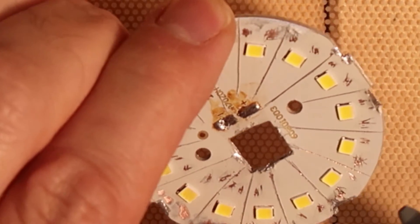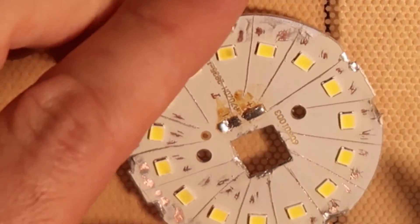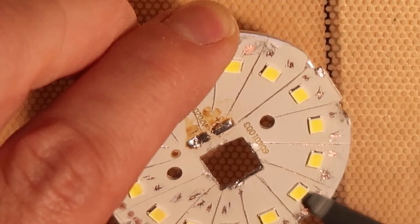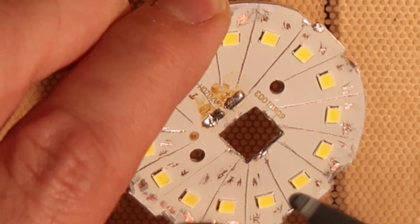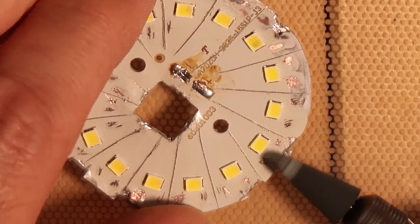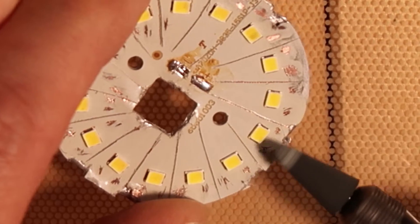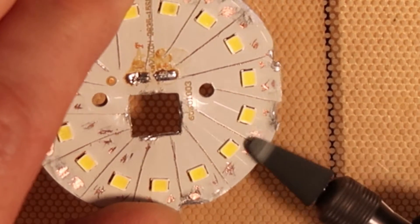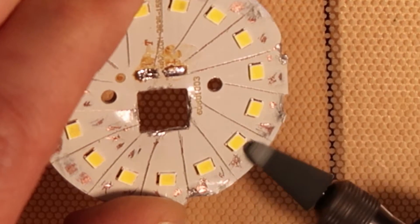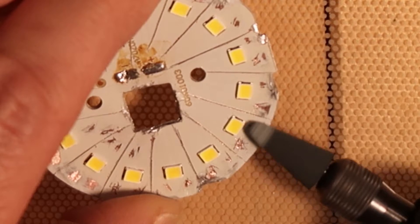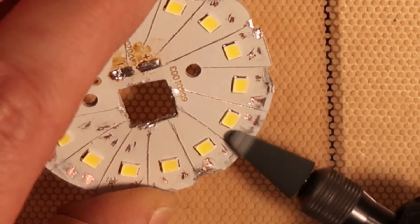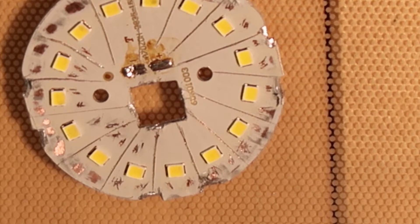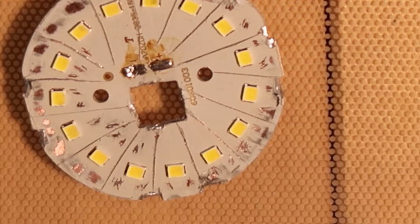I'm using this Dremel with something that looks like a stone. I will demonstrate now. I will take it and if you will see I'm touching gently. I'm using the Dremel gently in order not to ruin the PCB.